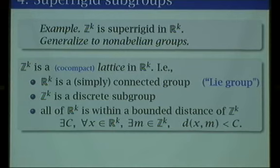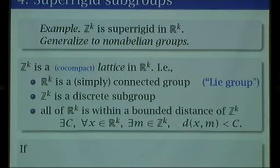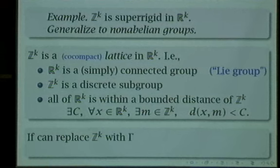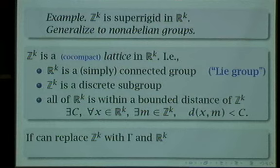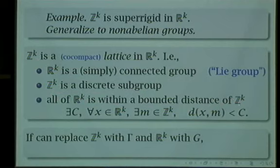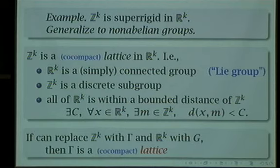That's what a lattice is, and that's the crucial thing to get a superrigid subgroup. In general, the definition of a lattice is this: if you've got a subgroup Gamma of a group G — replacing ZK with Gamma and RK with G everywhere — if G is a simply connected group, Gamma is a discrete subgroup, and every element of G is within about a distance of Gamma, then we say Gamma is a co-compact lattice in G. It's a discrete subgroup that fills up the whole group.